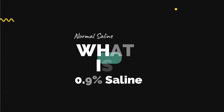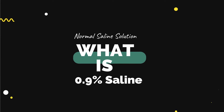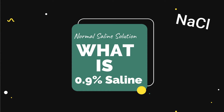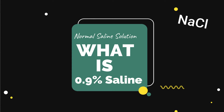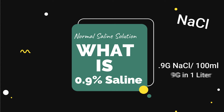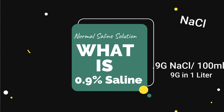Now to start, what even is normal saline solution? Normal saline solution can also be called 0.9% saline. The 0.9 stands for salt, also known as NaCl. To break it down further, the 0.9% stands for 0.9 grams of salt per every 100 milliliters in the liter bag — or you could say there are nine grams of salt in a liter bag.